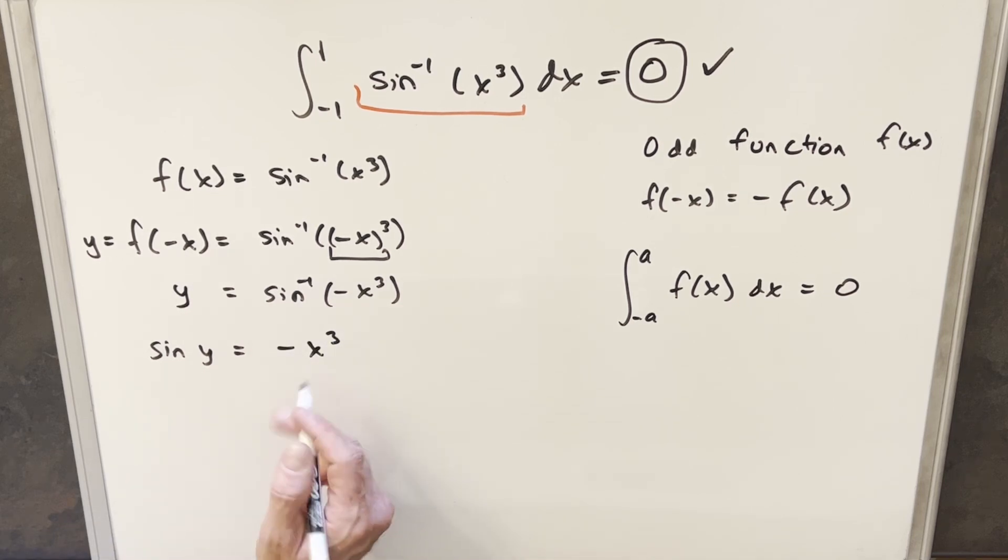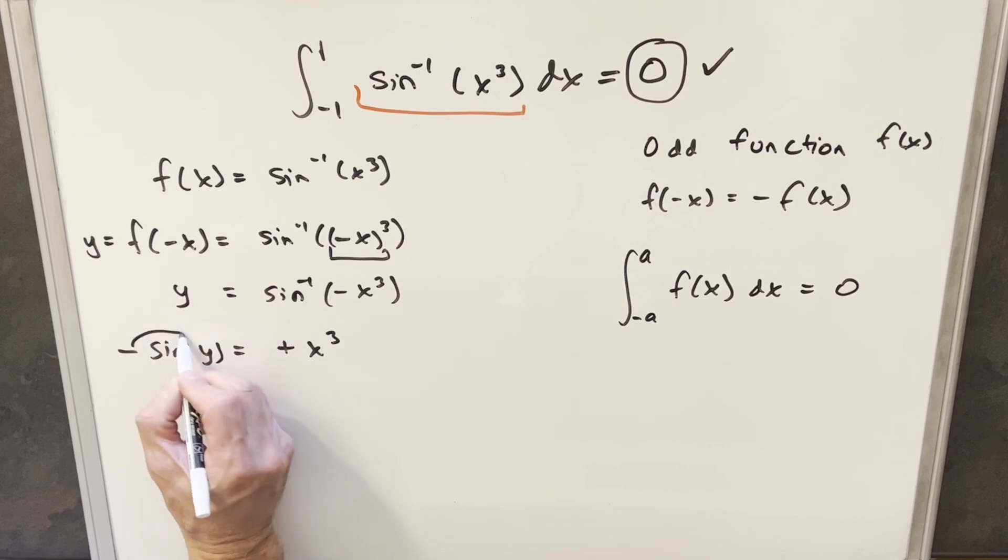Well, then I can multiply a minus 1 on both sides. So we'll change that to a plus, change that to a minus. But then if we just know that sine is an odd function, what that's going to allow me to do is take my minus sign and bring it in here like this.